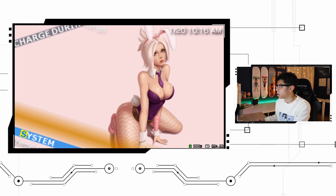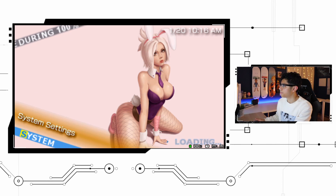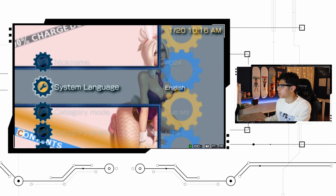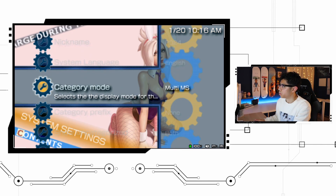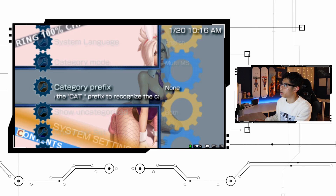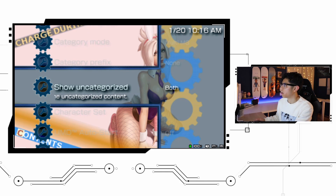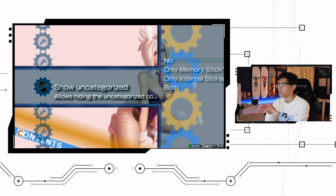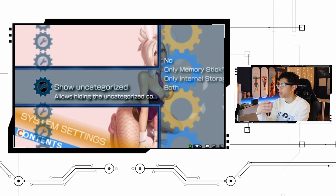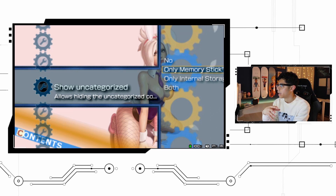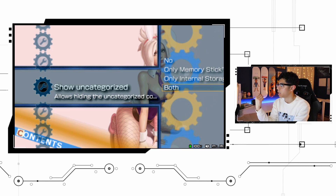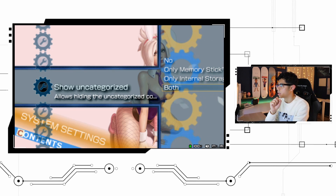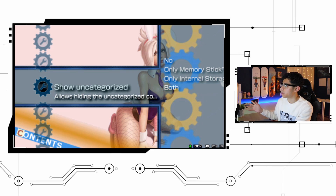Let's go to System and then System Settings. We're going to have new options: Category Mode, Category Prefix, and Show Uncategorized. Show Uncategorized will basically display all the stuff that's not in subfolders. If you have stuff that doesn't really fit in some of the folders you created, you can enable this and it will show up in the Uncategorized folder, which the plugin creates itself.